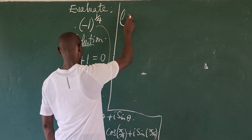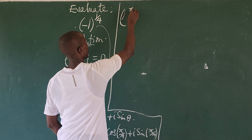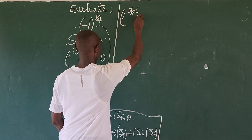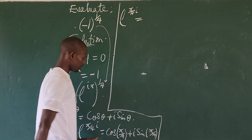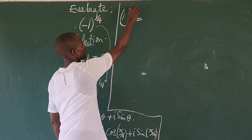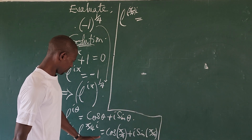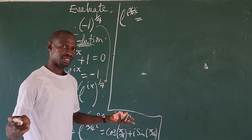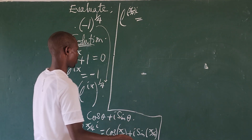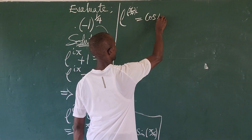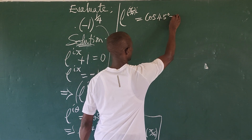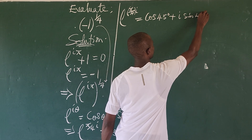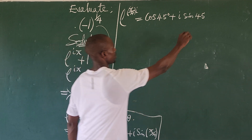Continuing, we evaluate e to the power of iπ over four. Now π over four equals 180 degrees over four, which gives us 45 degrees. So this equals cosine 45° plus i sine 45°.